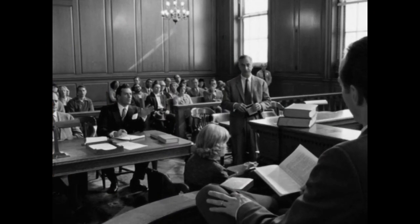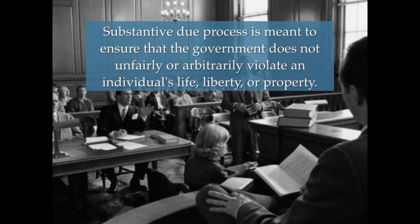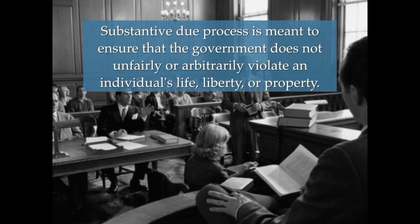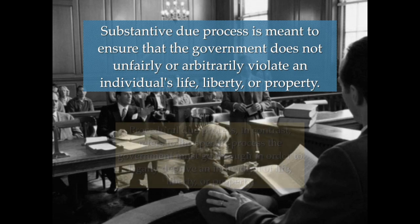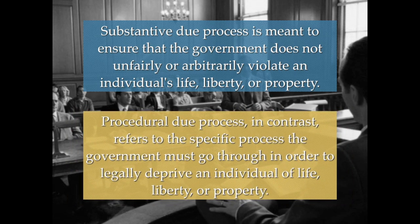There are two types of due process: substantive and procedural. Substantive due process is meant to ensure that the government does not unfairly or arbitrarily violate an individual's life, liberty, or property. This means substantive due process prevents the government from enacting policies that would deprive an individual of his or her civil liberties, unless it can be demonstrated that the policies are necessary. Procedural due process, in contrast, refers to the specific process the government must go through in order to legally deprive an individual of life, liberty, or property — meaning the government must go through the criminal justice system to legally take away someone's rights.